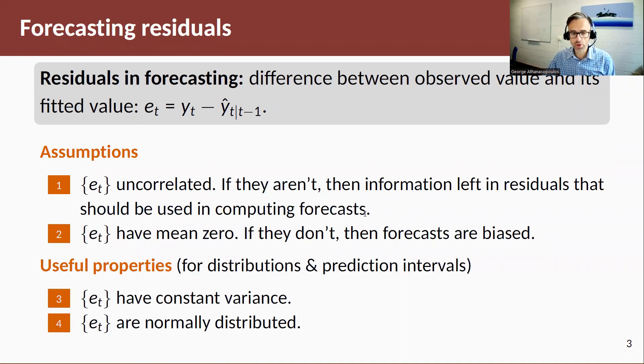Two additional assumptions which will be useful to have is that our residuals have constant variance, hence they are homoscedastic, and also they are normally distributed. Now, these are not crucial to have, but they do make life easier in terms of generating forecast intervals, for example, or other calculations around distributions. If they are not true, we can deal with them and do various things to adjust for these. But if they are true, that makes life easier. So, the two crucial assumptions are that our residuals are uncorrelated and have mean zero, and two useful properties is that they are homoscedastic and normally distributed.